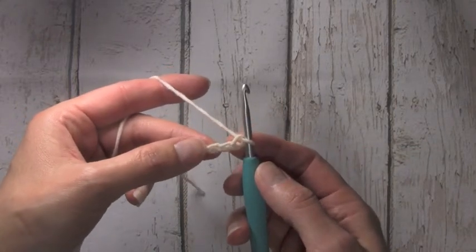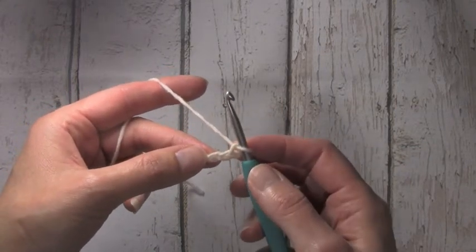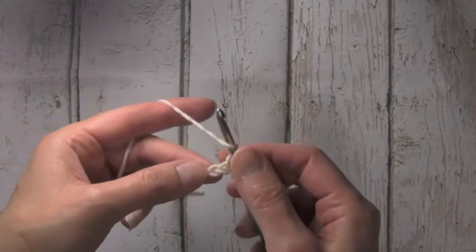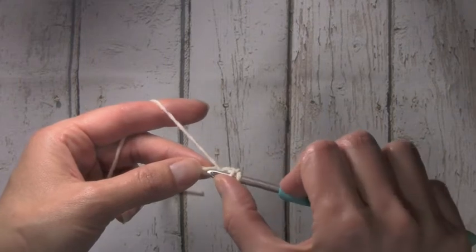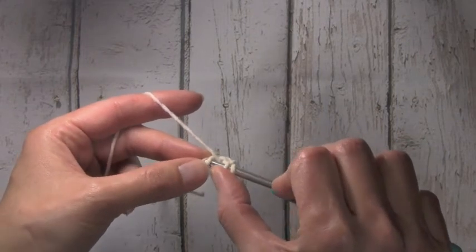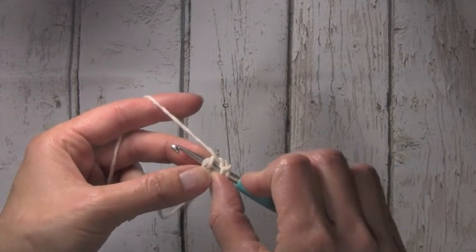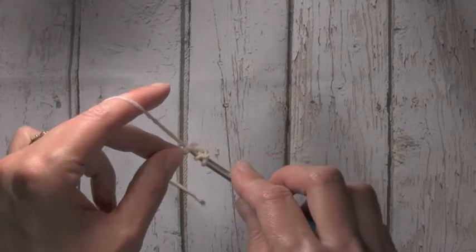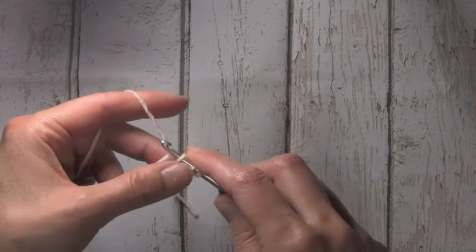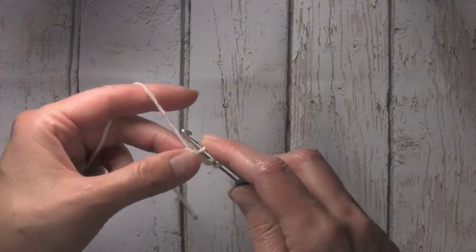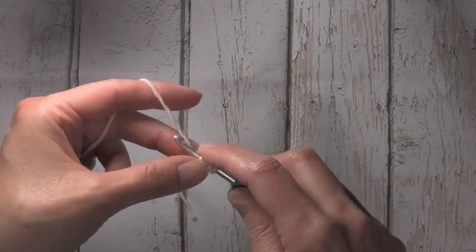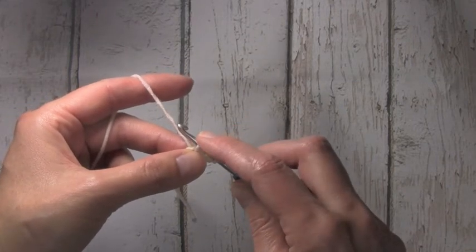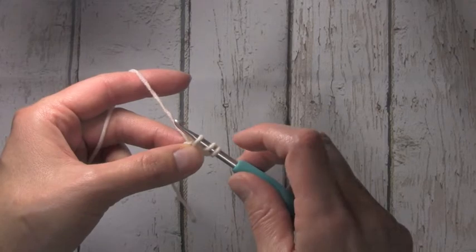To start your first stitch, as if you were doing a half double you're going to yarn over and insert your hook in that third chain from the hook. Then we will yarn over and pull up a loop. This loop that I've just pulled up is going to be used as my chain, what I will work my next half double crochet into.